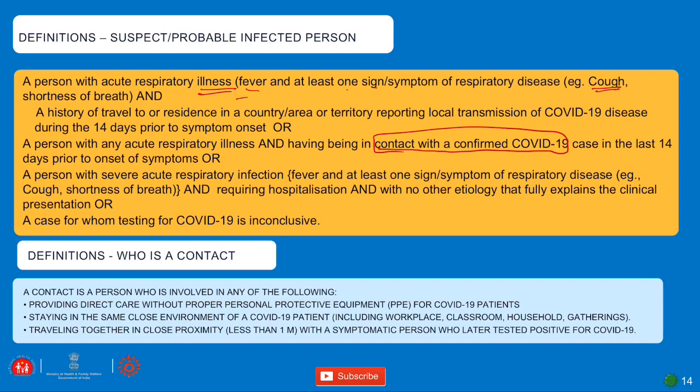A person with severe acute respiratory infection requiring hospitalization and no other etiology is also considered a suspect or probable infected person.